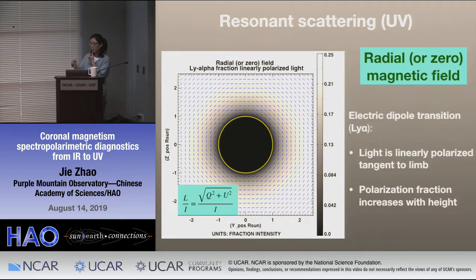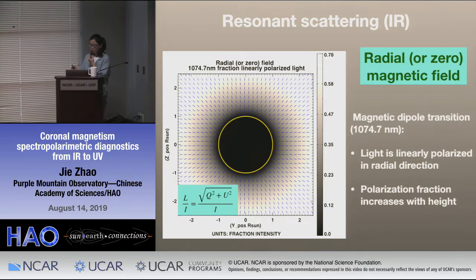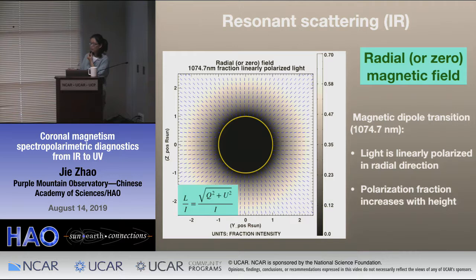Then we show the result in infrared. The background is again the linear polarization fraction and the blue line segments show the azimuth. The linear polarization fraction is also increasing with height for the same reason as in UV. But the azimuth is perpendicular to the solar limb, because IR lines are usually approximated as magnetic dipole transitions. So there is a 90-degree difference in the azimuth between the IR and the UV.